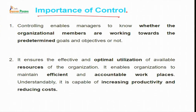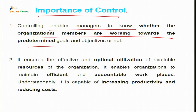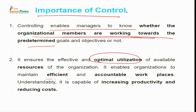After knowing the characteristics of the control process, let us move ahead to understand the importance of control. Controlling enables managers to know whether organizational members are working towards predetermined goals and objectives or not. Control ensures that organizational activities are properly carried out and short and long term goals are attained in a time-bound manner. It ensures the effective and optimal utilization of resources, enables organizations to maintain an efficient and accountable workforce, and is capable of increasing productivity and reducing cost.